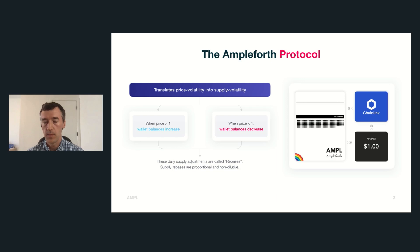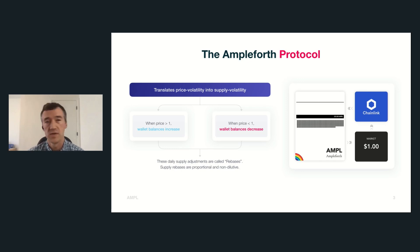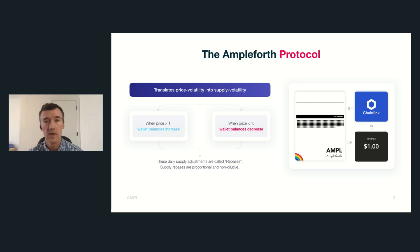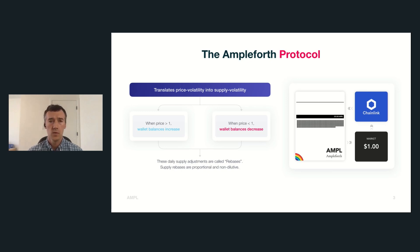Every day, the protocol compares the price of Ample in the marketplace to the price target. Ample targets the 2019 US dollar, which is roughly one dollar today. Each day, if the price of Ample is above the price target, the supply needs to increase; when the price is below the price target, the supply needs to decrease in order to maintain equilibrium.